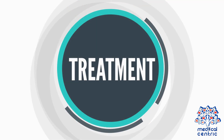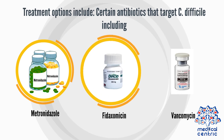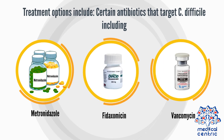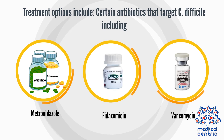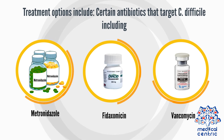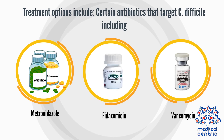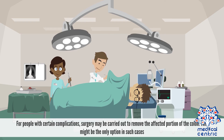Treatment options include certain antibiotics that target C. difficile, including metronidazole, fidaxomicin, and vancomycin. These antibiotics keep C. difficile from growing. For people with certain complications, surgery may be carried out to remove the affected portion of the colon, which might be the only option in such cases.